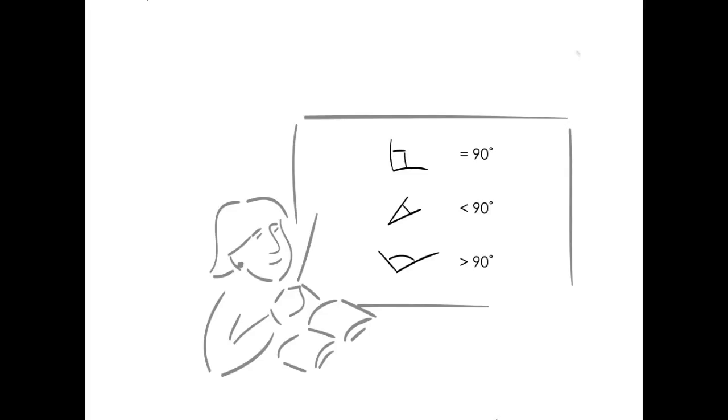There are lots of kinds of angles, but we're going to look at these three types. First of all, a right angle. A right angle is equal to 90 degrees.